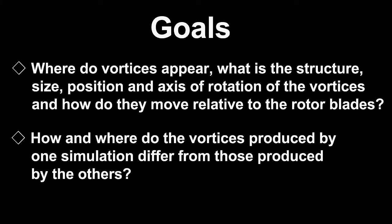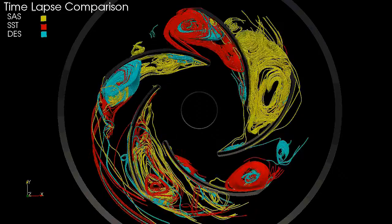Where do vortices appear? What is the structure, position and axis of rotation of the vortices? And how do they move relative to the rotor blades? How and where do the vortices produced by one simulation differ from those produced by the others?